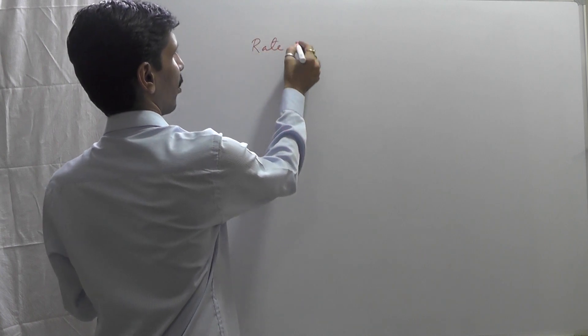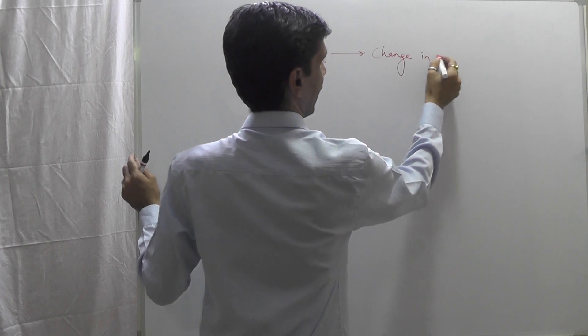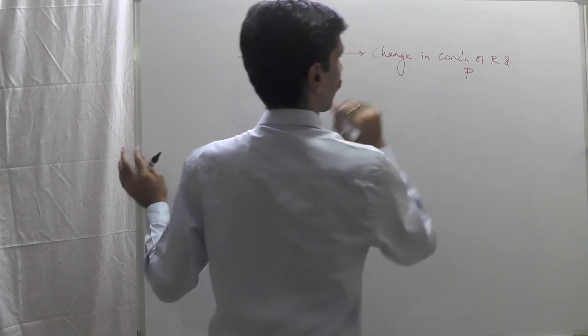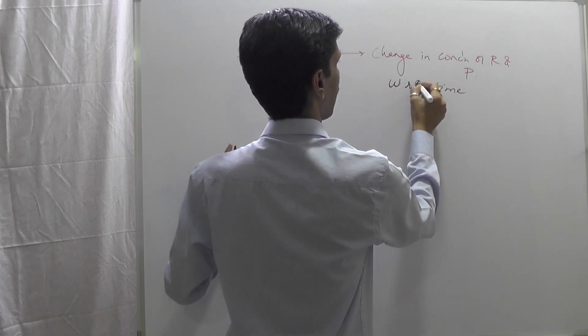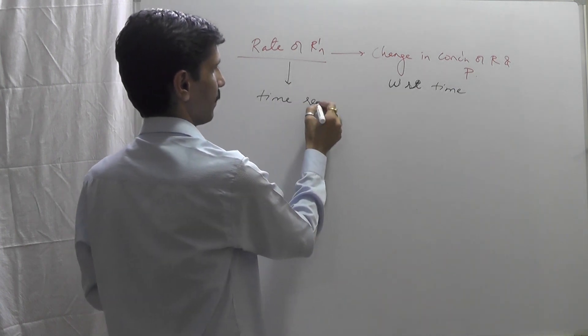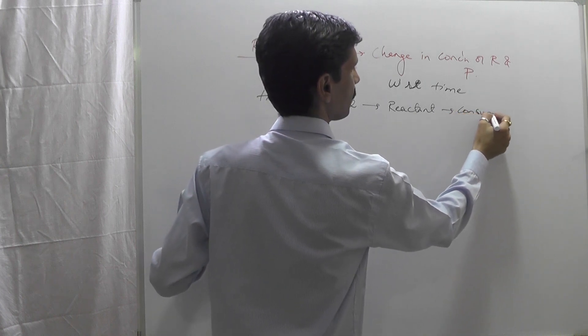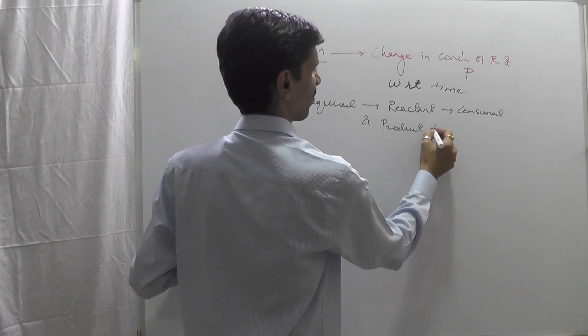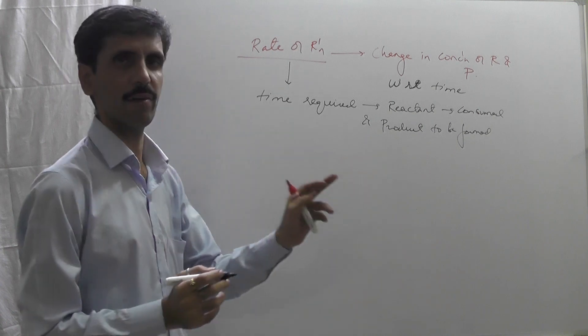Once we understand the title, we move on to the first topic: rate of reaction. The rate of reaction is the change in the concentration of the reactants and products with respect to time — in other words, the time required for the reactant to be consumed and the product to be formed.